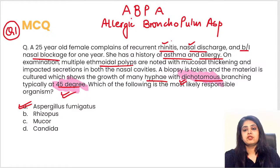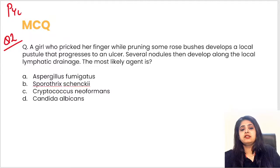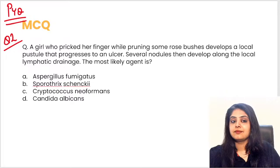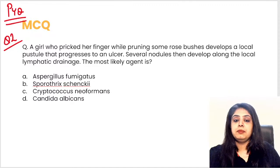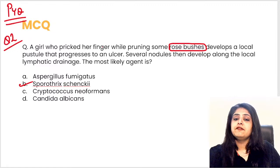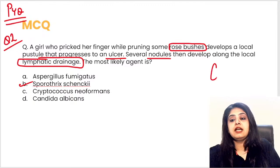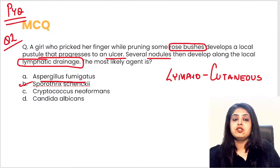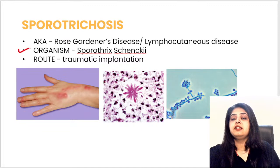Question two: a girl working in a field with rose bushes develops a pustule that progresses to an ulcer, then a nodule, spreading along the lymphatic drainage. This is a lymphocutaneous disorder, and the fungus responsible is Sporothrix. Sporothrix schenckii causes rose gardener's disease and spreads in the direction of lymphatic drainage.